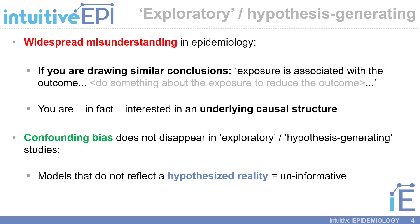With respect to exploratory or hypothesis-generating studies, as introduced in Part 2, I believe there is a widespread misunderstanding in epidemiology. Specifically, if you are interested in drawing conclusions that your exposure is associated with the outcome, and that you should do something about the exposure in order to reduce the outcome, you are in fact interested in an underlying causal structure. Confounding bias does not disappear in this setting, and models that do not reflect a hypothesized reality or conceptual framework — which may be depicted using a diagram or a directed acyclic graph — are largely uninformative.